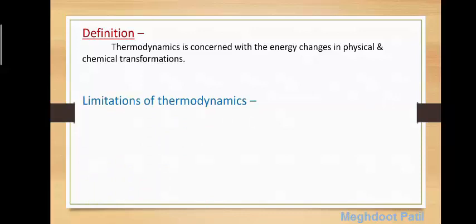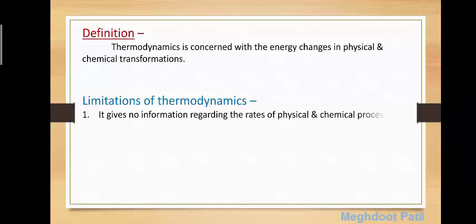Thermodynamics has certain limitations. First one is, it gives no information regarding the rates of physical and chemical processes. When we study thermodynamics, we do not get information about how fast a process, whether chemical or physical, occurs.